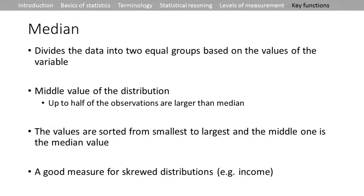The median divides the data into two equal groups. It's the middle value of the distribution — up to half of the observations are larger than the median. Values are sorted from smallest to largest and the middle one is the median. It's a good measure for skewed distributions, like income data where there are fewer very high earners and most people are on the lower end.